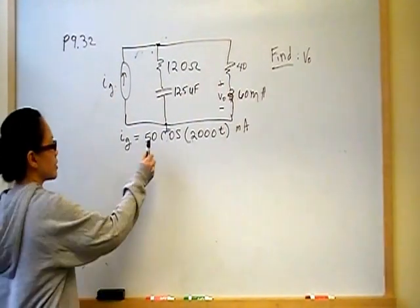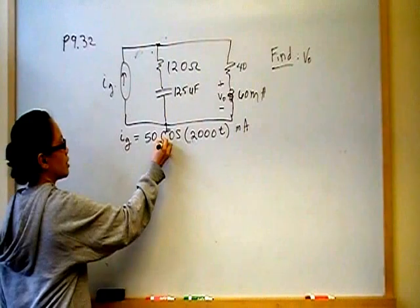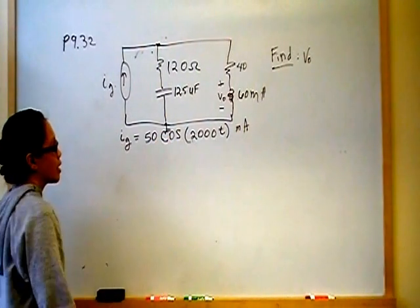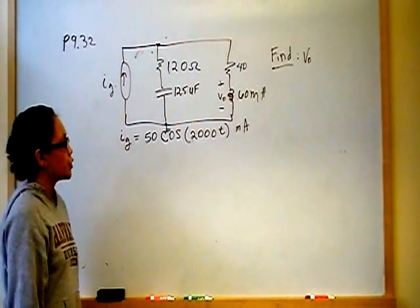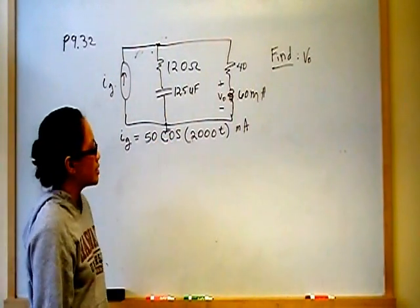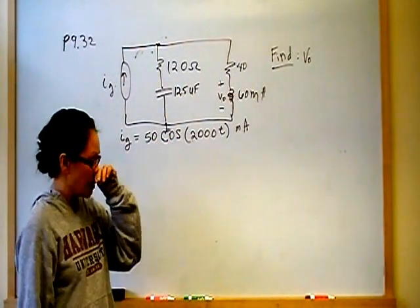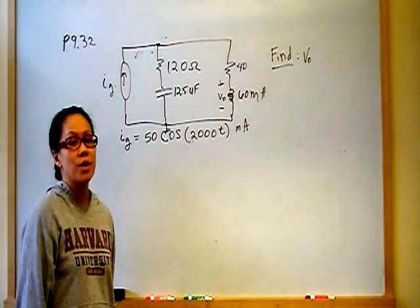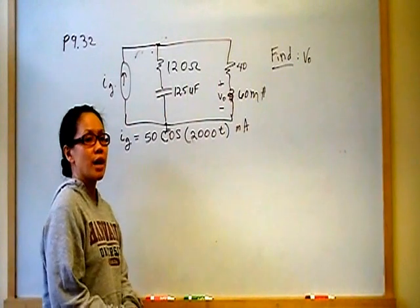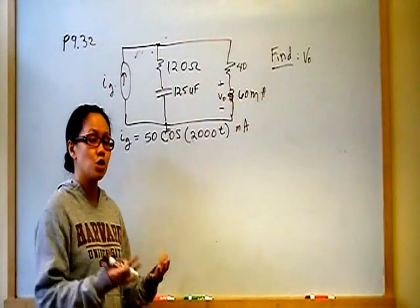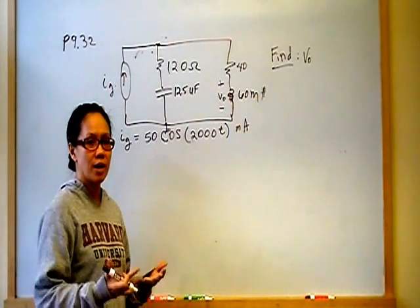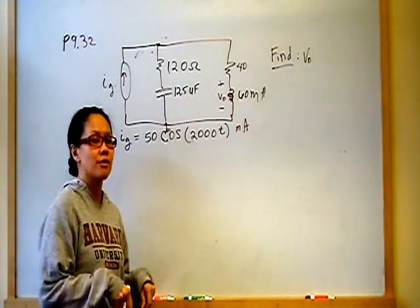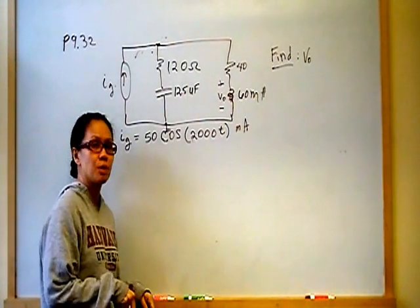The current is 50 cosine of 2000T milliamps. If you get help from this video, please do a small favor and like the Facebook page below.